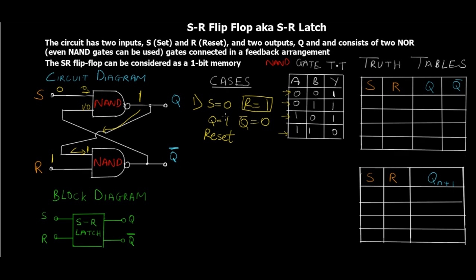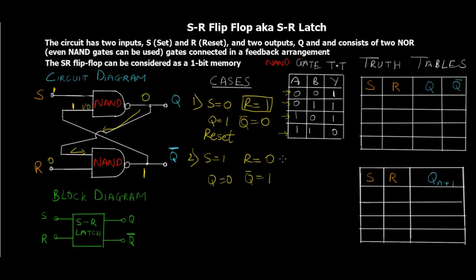For NAND Case 2: S = 1 and R = 0. Since R = 0, one input of the lower NAND gate is 0, so Q-bar = 1. This goes as input to the upper NAND gate; with S = 1 and feedback = 1, both inputs are 1 — giving Q = 0. So Q-bar = 1 and Q = 0. Since S = 1, this is the Set state.